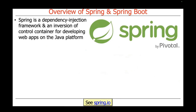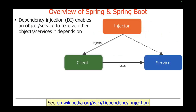Spring is a dependency injection framework and an inversion of control container used to develop web apps on the Java platform. Dependency injection is a technique that enables an object, service, or microservice to receive other objects, services, or microservices that it depends on.